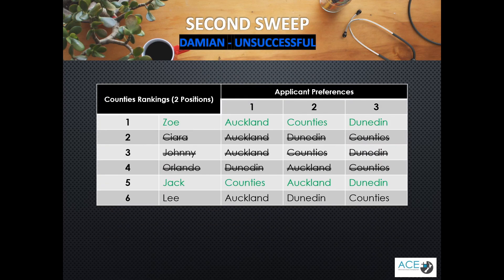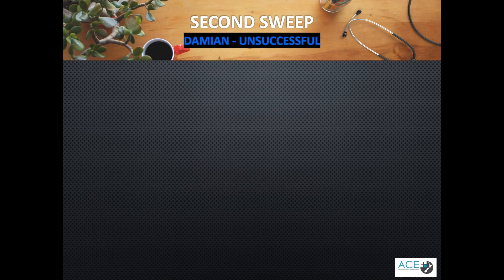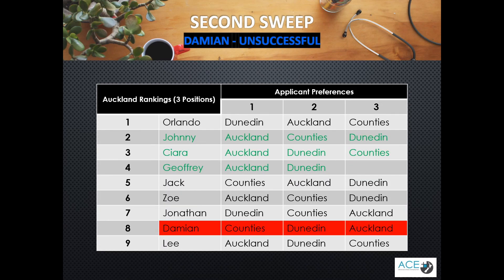Damien was also unsuccessful in our example match. Damien ranked Counties first, however Counties did not rank Damien, so there is no way he could be matched to this DHB. Dunedin, Damien's second preference, filled all of their positions with applicants who preferenced Dunedin first, and therefore Damien is not matched here either. Auckland, Damien's third preference, also filled all of their positions in the first sweep with applicants who preferenced them first. This means Damien is unsuccessful in the example match.